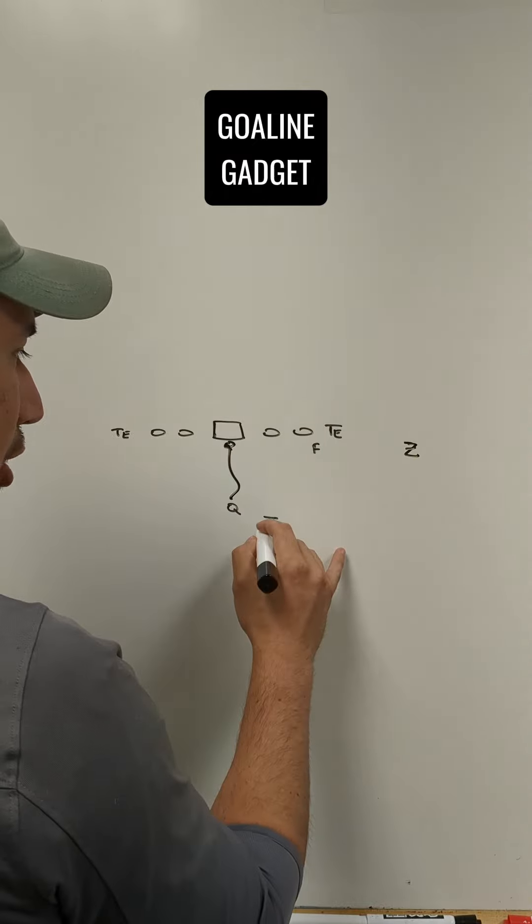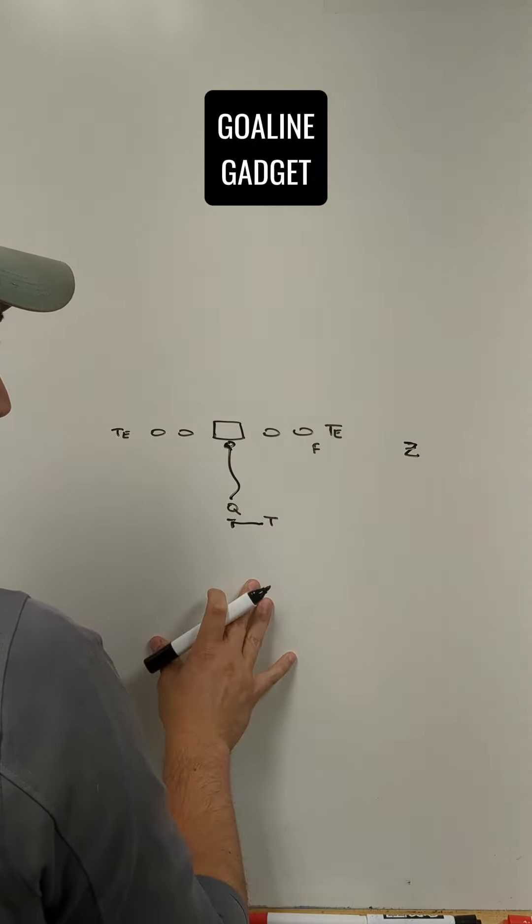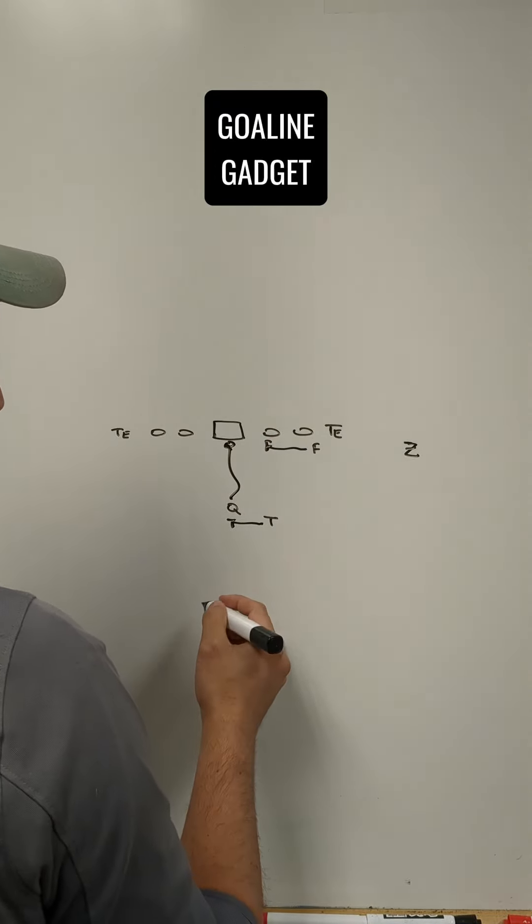We motioned the quarterback to direct snap at the center. And while we did that, we put the tailback here at running back. So it made it look like we were going to be QB sneak. I believe we also moved the fullback inside. So it was like a formation shift. It made it look like QB sneak.